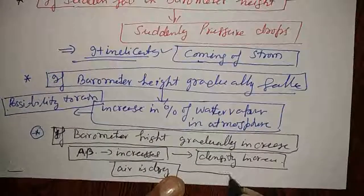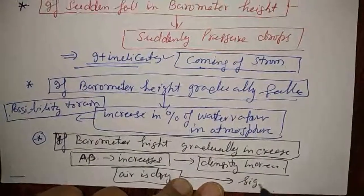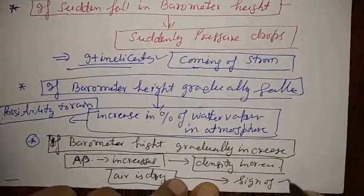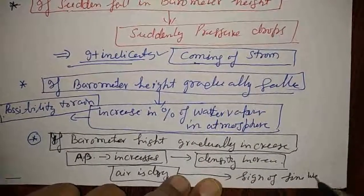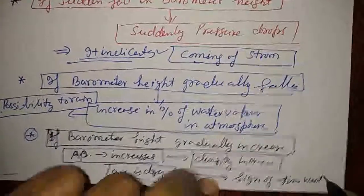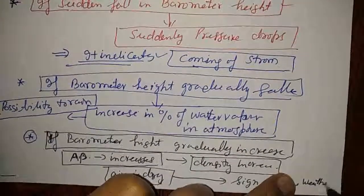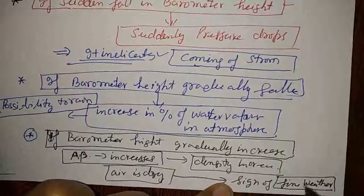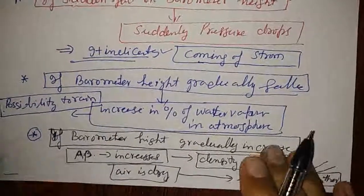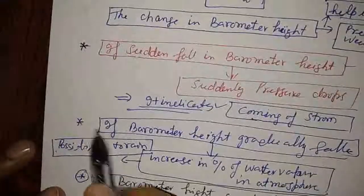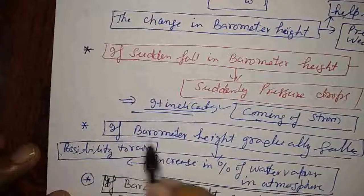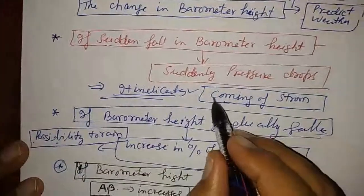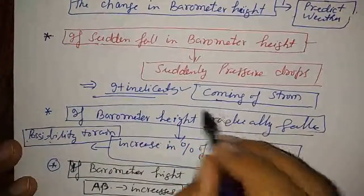If air is dry and water vapor component decreases, it indicates a sign of fair weather — fine weather. So we can see when fine weather will occur, when there will be possibilities of rain, and when there will be signs of an approaching storm.